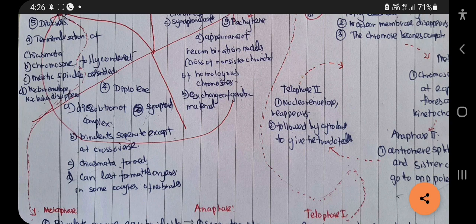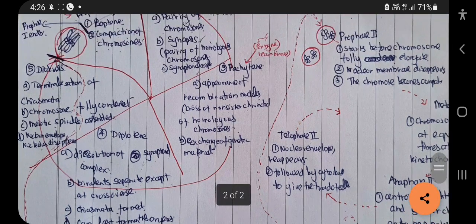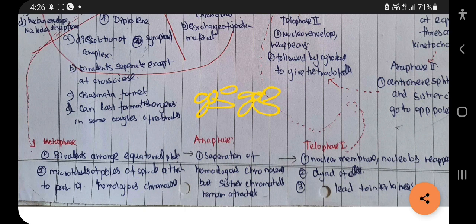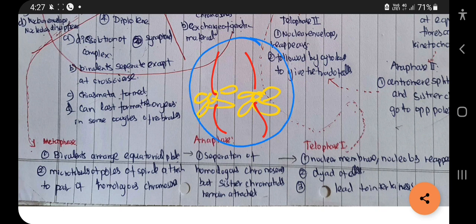Prophase I is completed, then the cell enters metaphase I. The bivalents are arranged at the equatorial plate, same as in mitosis. The microtubules of the spindle poles attach to the pair of homologous chromosomes.